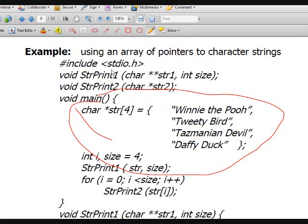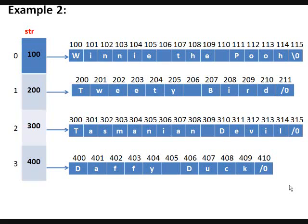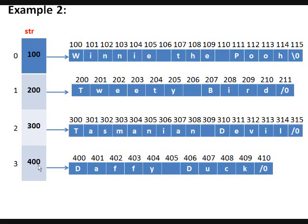We also have two functions here: strprint1 and strprint2. strprint1 will print all the strings at once. The declaration of 'str' has four cells that contain the addresses of the strings. At index zero it contains the base address of the string 'Winnie the Pooh' — the address of the first character 'W'. Index one contains the address of 'Tweetie Bird', which is the address of 'T', which is 200. Index two contains the address of 'Tasmanian Devil', and index three contains the address of 'Daffy Duck'.